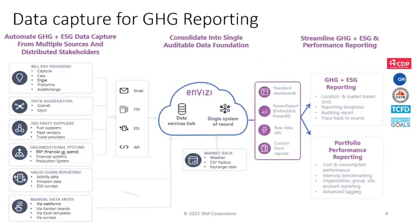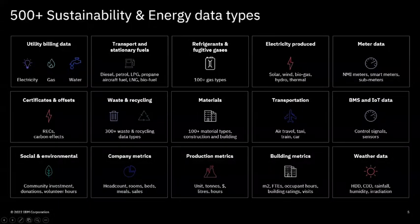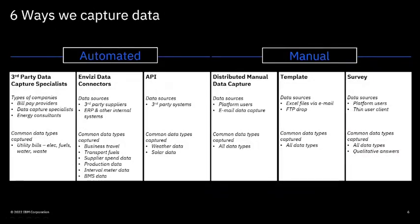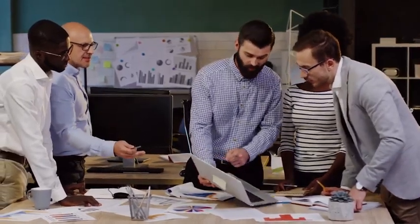NVZ can automate the capture of almost any ESG data type from any data source in order to create a robust data foundation with accurate, complete, and timely data. These are the types of data we capture here in NVZ, spanning the gamut of environmental, social, and governance data types as well as data required for driving organizational performance. We are continuously adding to the data types we capture on behalf of our customers, so if we don't capture it today, we will add it during our standard system implementation project. NVZ captures over 90% of all data automatically across our customer base, and here at Quantum Stride we can help you with data discovery and setup for NVZ.